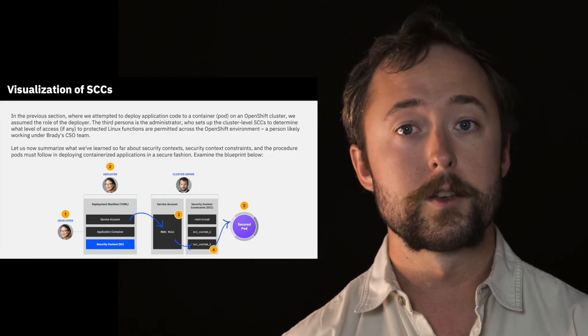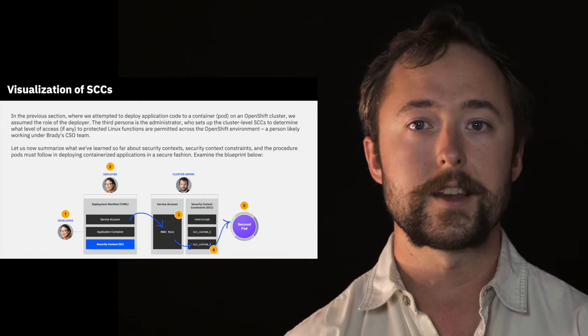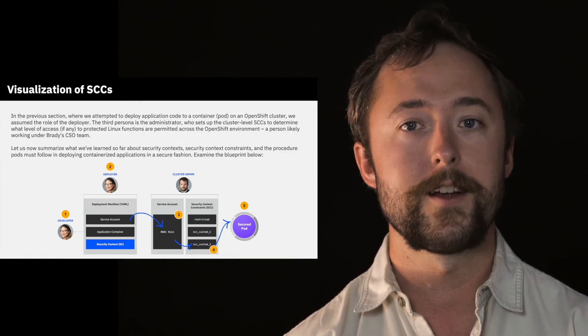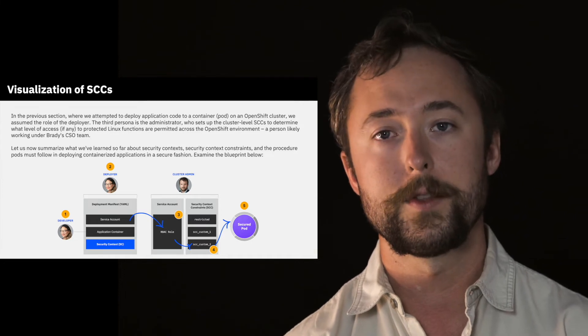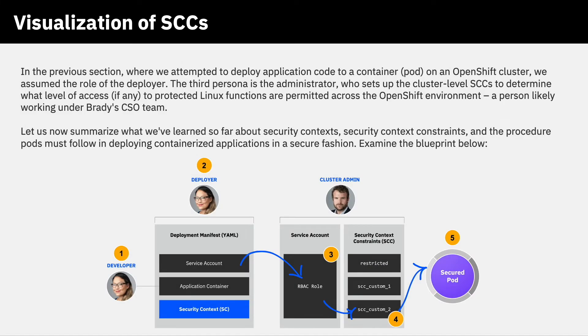Now let us summarize what we've learned so far about security contexts, security context constraints, and the procedure that pods must follow in deploying containerized applications in a secure fashion. We'll examine that using the blueprint shown on your screen and within your documentation. At bullet one, a developer from Amy's team writes an application that requests access to protected Linux functions. In bullet two, a deployer, likely also from Amy's team, authors a YAML-based deployment manifest with instructions and requests regarding access to those protected Linux functions. The deployment manifest must contain a security context — an SC — that explicitly states the protected Linux functions being requested by the containerized application.